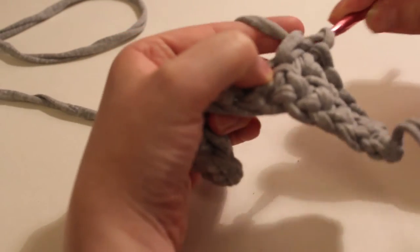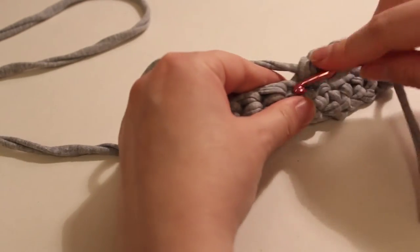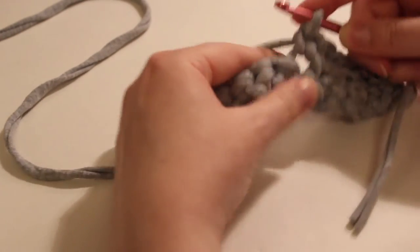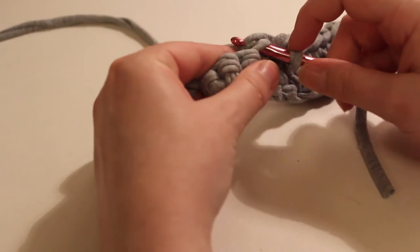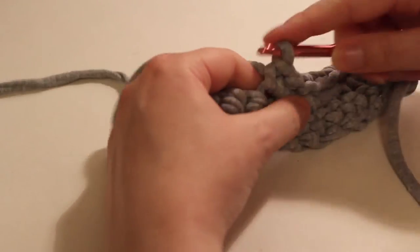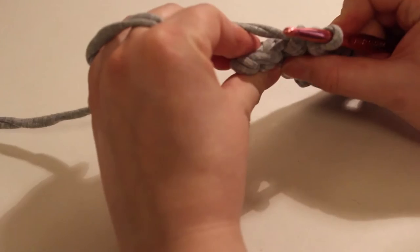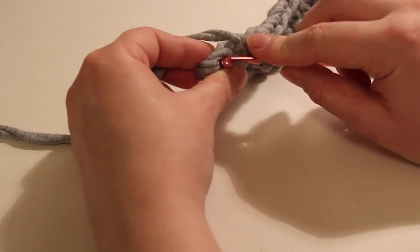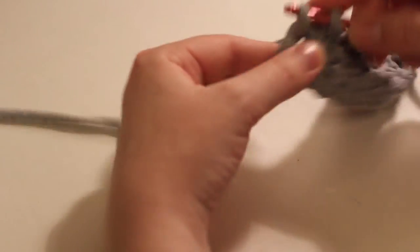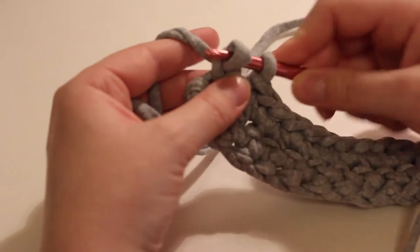So one single crochet in each stitch, all the way down. And when you get to the edge, it should look like this. So you'll have one stitch and then something down there. And you're just going to go into that stitch also, just like you did with every other—oh, sorry—here we are. Just like the other stitches, and you're going to finish a single crochet here.